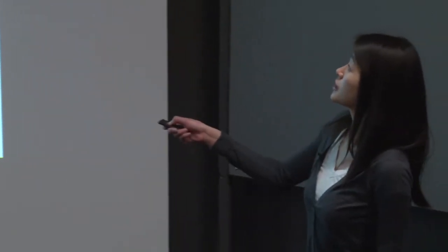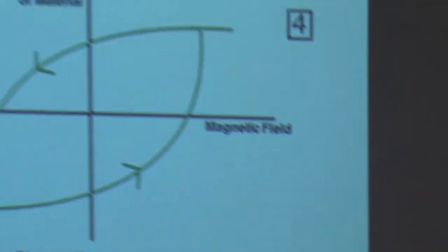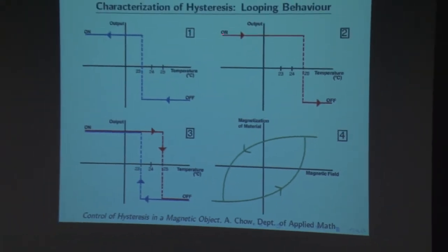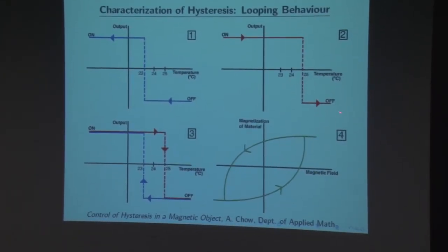In reality, the desired temperature is a range, say between 23 and 25. If initially your thermostat is off and then the temperature in the room drops below 23, then the thermostat switches on. On the other hand, if initially your thermostat is on and the temperature in the room rises above 25, then the thermostat switches off.